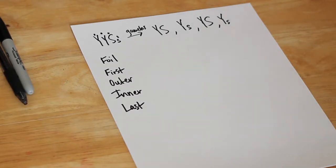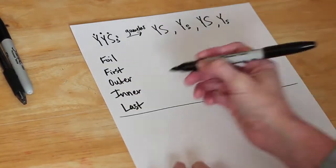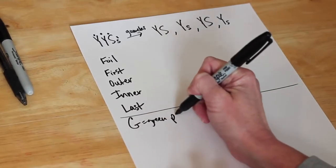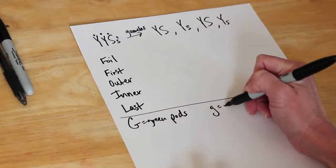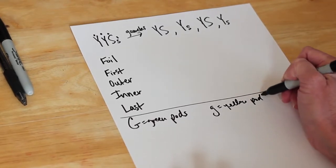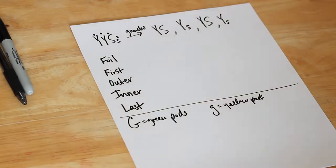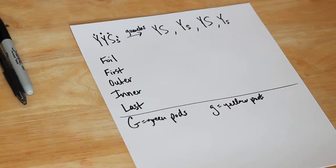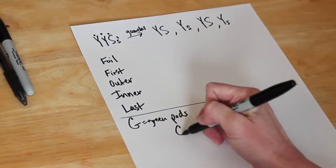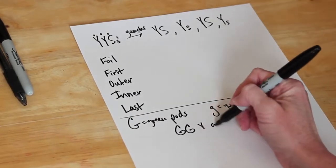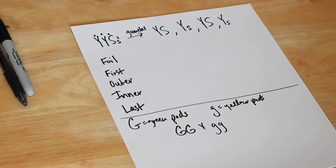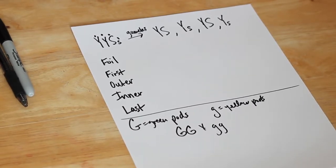Another problem: in peas, green pods are dominant over yellow pods. G stands for green pods; little g stands for yellow pods. The problem asks: if a homozygous dominant plant is crossed with a homozygous recessive plant, what will be the phenotype of the F1 generation? Homozygous dominant has two dominant alleles; homozygous recessive has two recessive alleles.